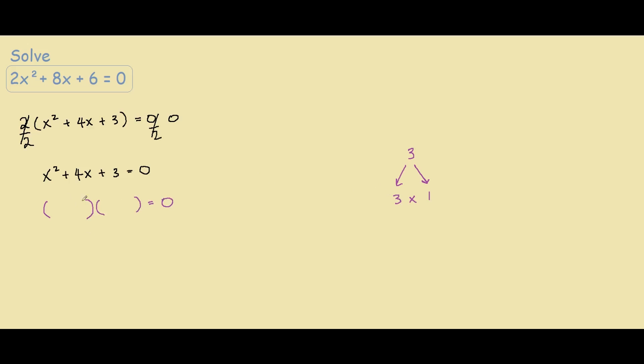When we have 3 over here, we do x plus 3 times x plus 1. And the 3 and 1 come from our 2 factors over here.